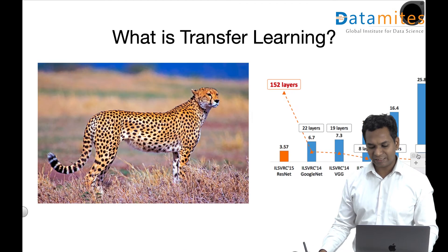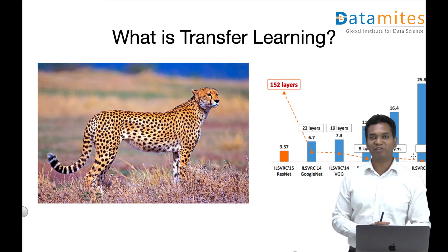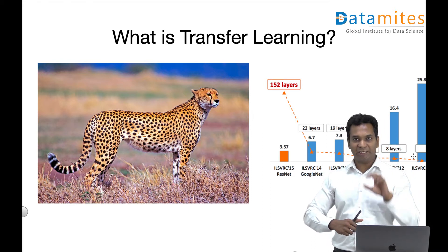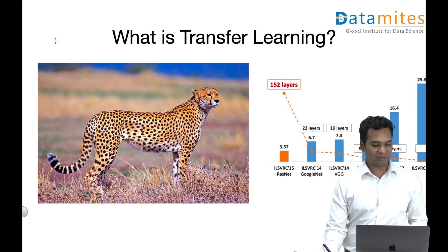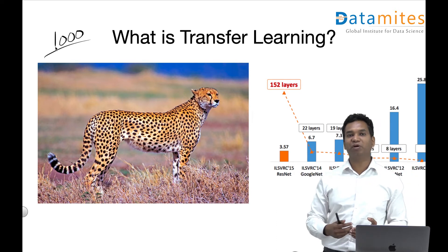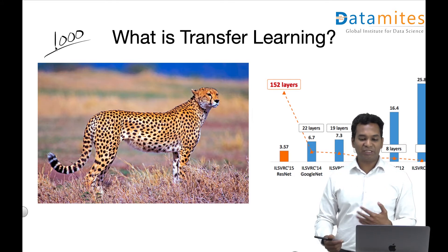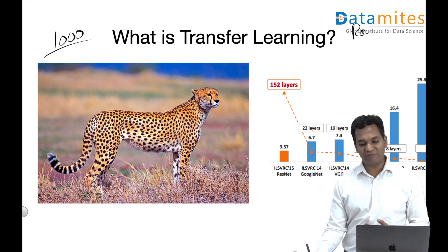Let's say I want to train a convolutional neural network image classifier to identify a cheetah. But I only have a thousand images of cheetah, and that's not good enough to train a CNN model. What I can do is use an existing pre-trained CNN model — for example, ResNet, which you can download.